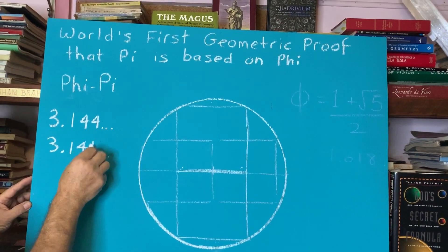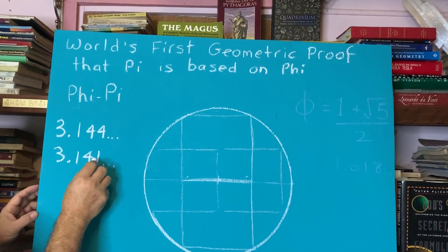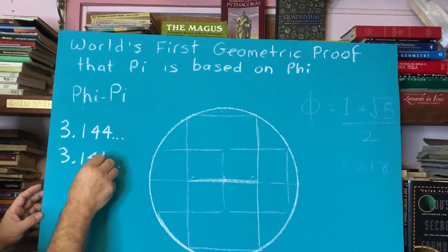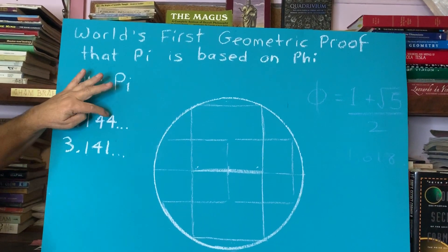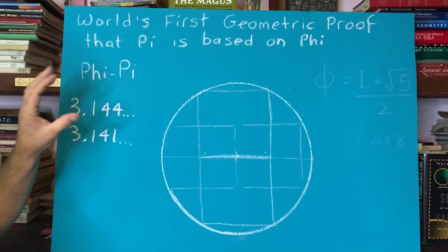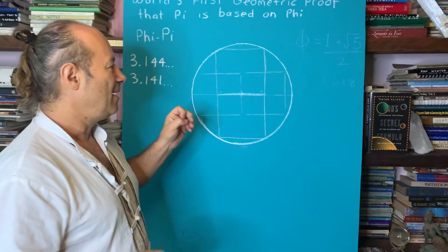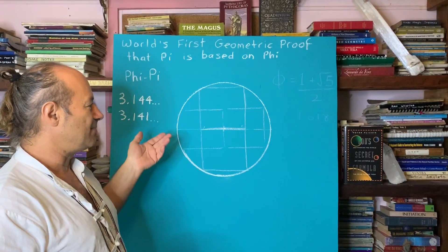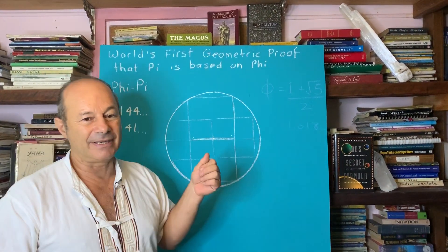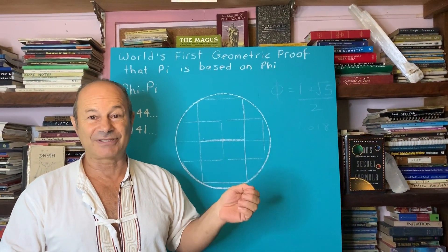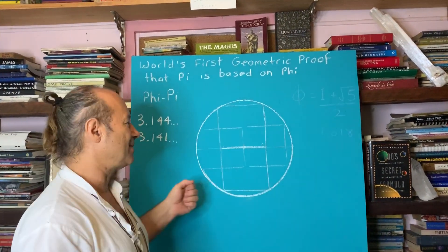So there's an error in the third decimal from 1, which is 1 in the 1000, to the 4 here. So there's 0.003, which is 3 in the 1000th of an error. When we establish that Pi is based on Phi, we will realize that we've been in error for 2,500 years since Archimedes showed an approximation to it.